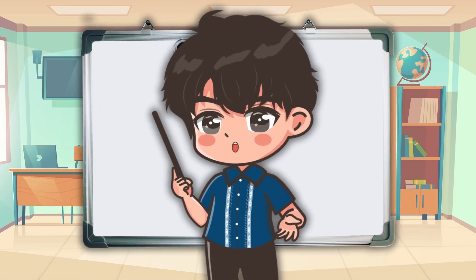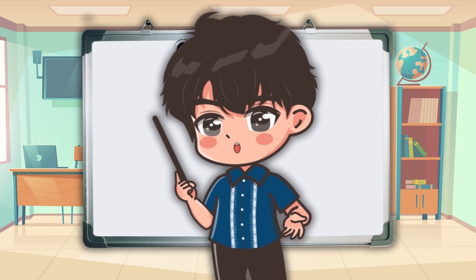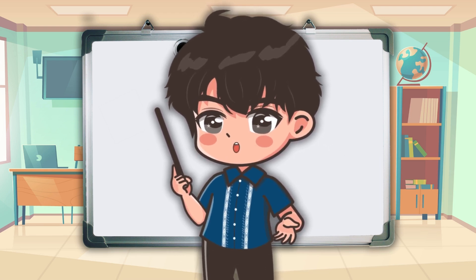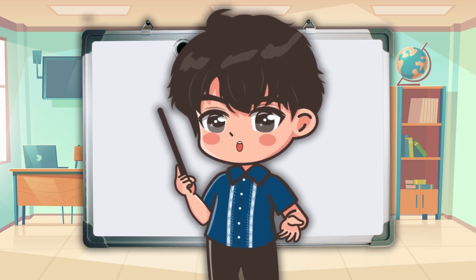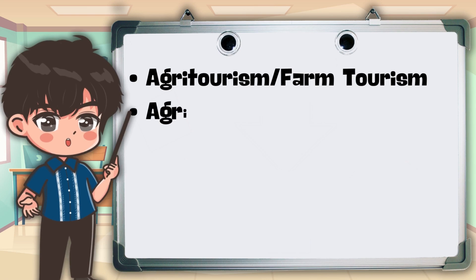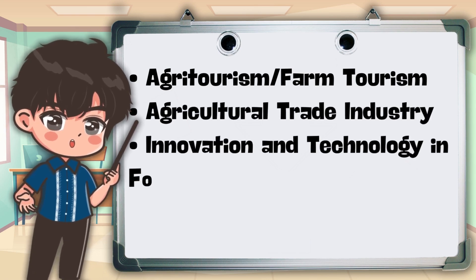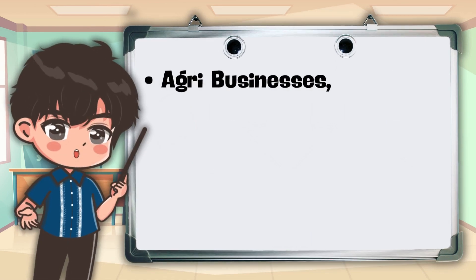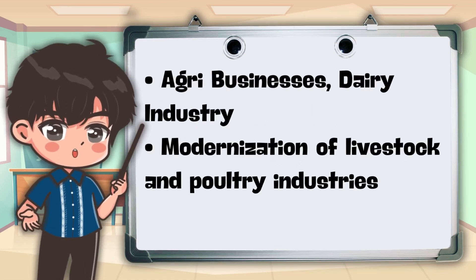This time we are going to explore some exciting opportunities in various sectors of the agricultural industry. As many of you know, agriculture is not just about farming anymore. It encompasses a wide range of fields, including agritourism or farm tourism, agricultural trade industry, innovation and technology in food industry, agribusinesses, dairy industry, and the modernization of livestock and poultry industries.